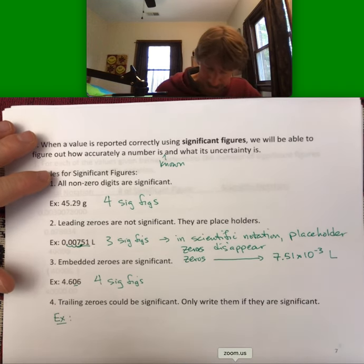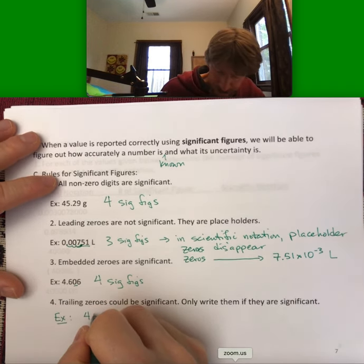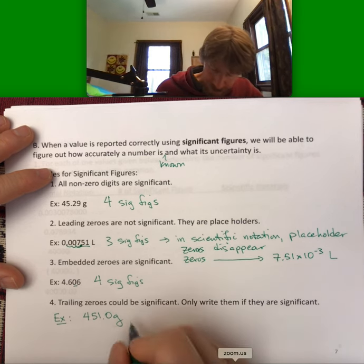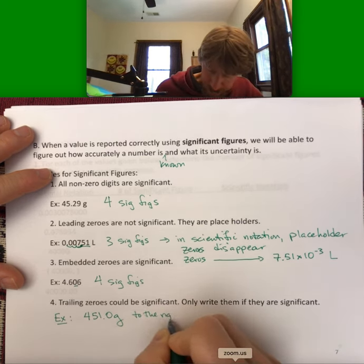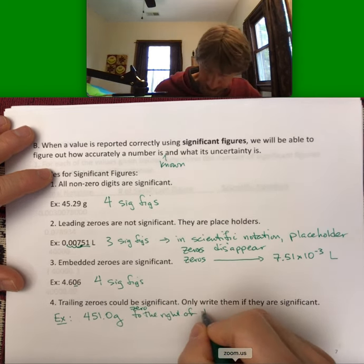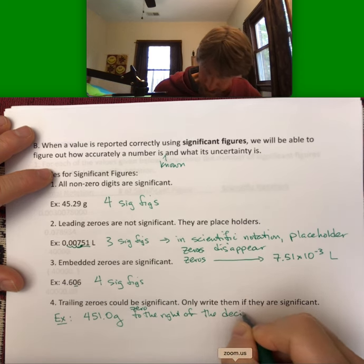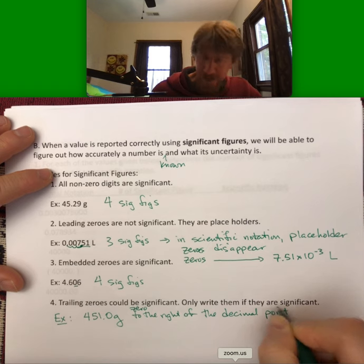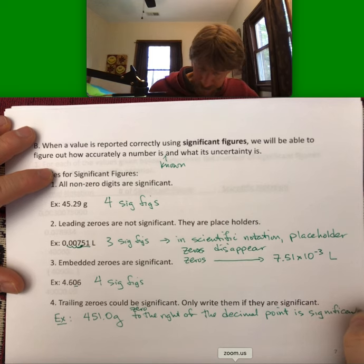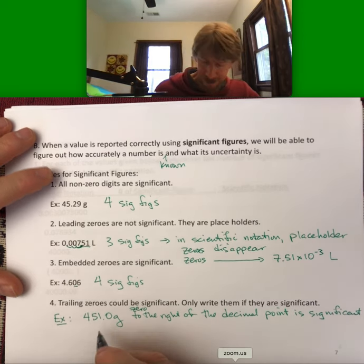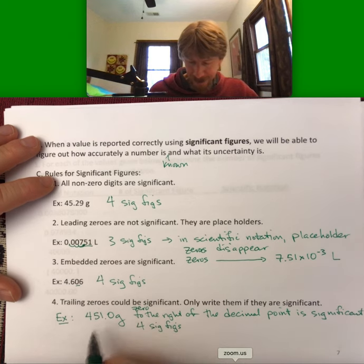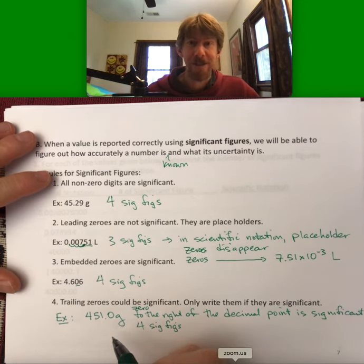So for fifty-one point zero grams, this zero to the right of the decimal point is significant. This number has four sig figs. And that's a trailing zero because it's all the way to the right—a zero on the right is a trailing zero.